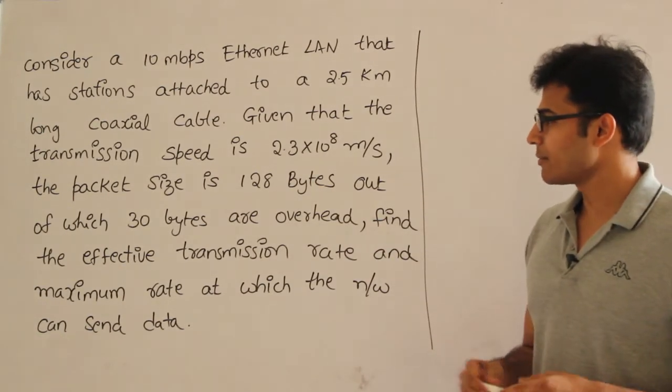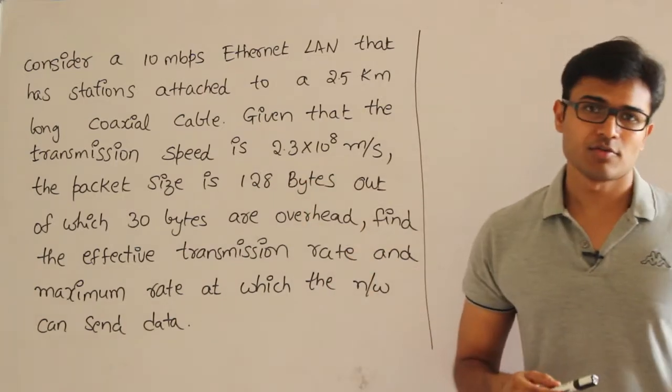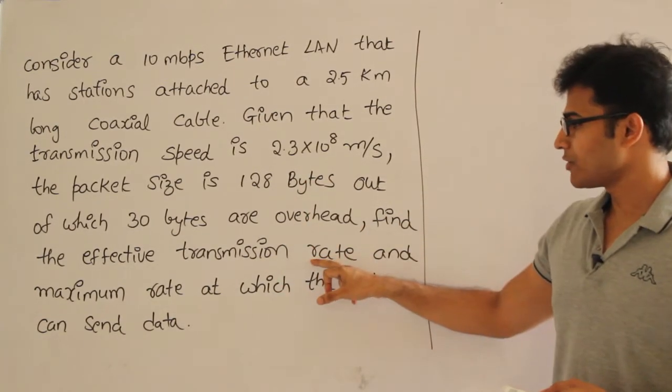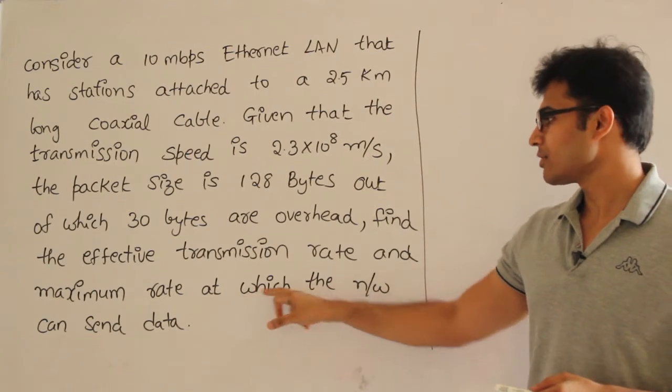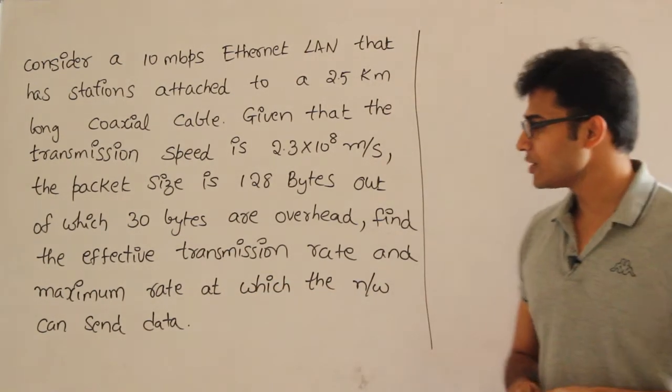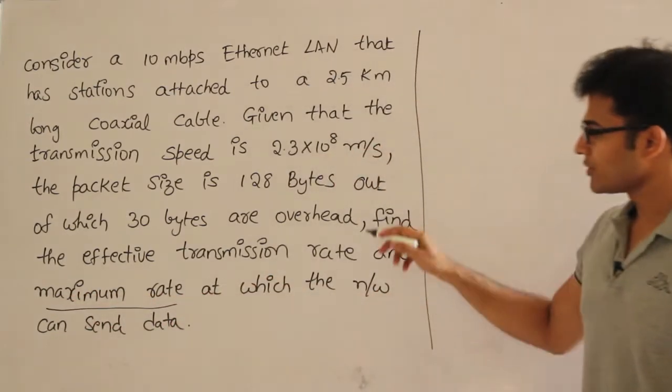So when you're sending 128 bytes in one packet, 30 bytes is headers. Find the effective transmission rate and the maximum rate at which the network can send data. They're asking two things: what is the maximum rate at which the network can send data, and what is the effective transmission rate?